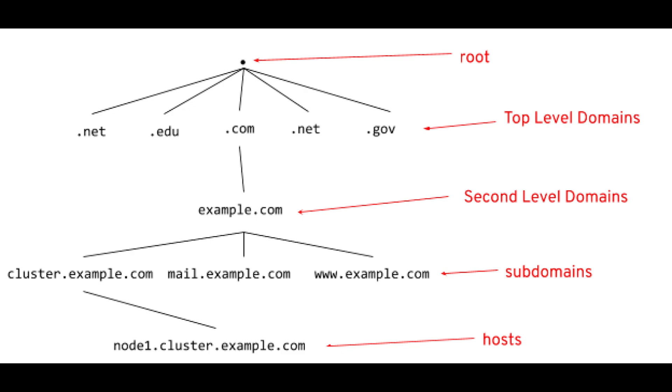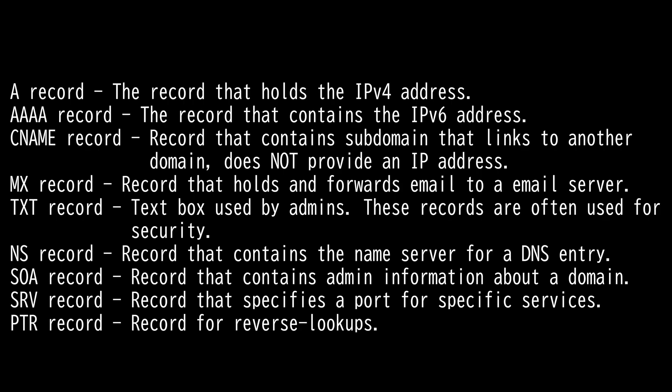Now let's talk about DNS record types. Record files, also known as zone files, are instructions that live in authoritative DNS servers. These files provide information about a domain — like who the admin is and what IP address is associated with that domain. Think of it as a product review page with all the information about that product. Here are the common DNS records: A record, Quad A record, CNAME record, Mail Exchange record, Text record, Name Server record, Start of Authority record, Service record, and Pointer record.